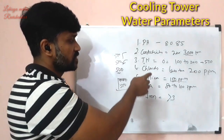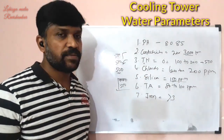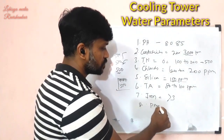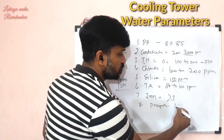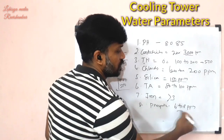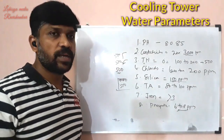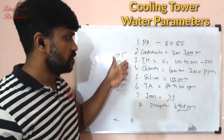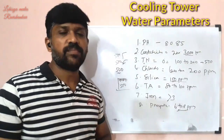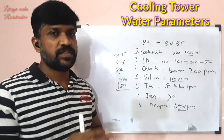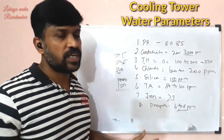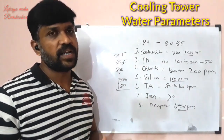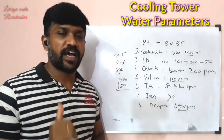If you check these parameters — pH, conductivity, total hardness, chlorides — and maintain them in range, the cooling tower will function properly. The pH should be in the range of 6 to 8. These values are important to maintain the cooling tower and check water quality. If these parameters change, the water quality will be affected, including biological values.